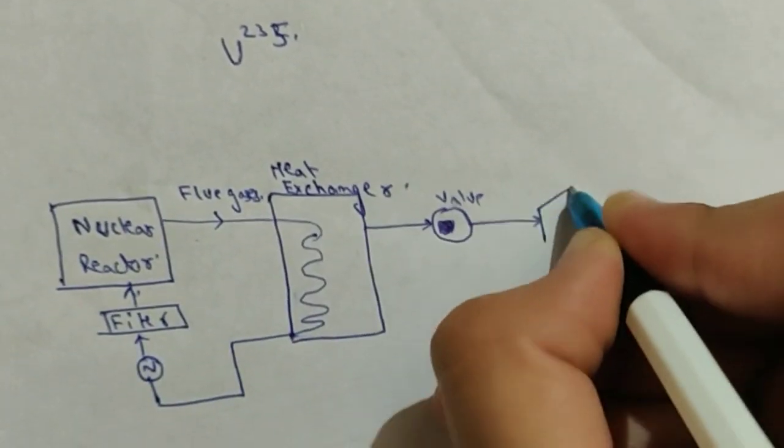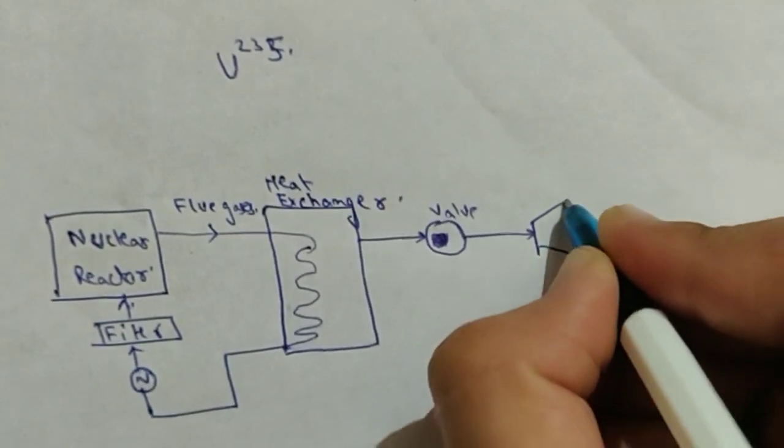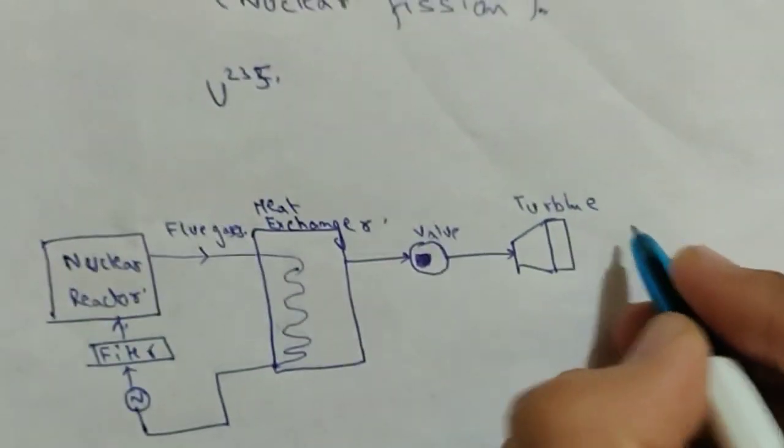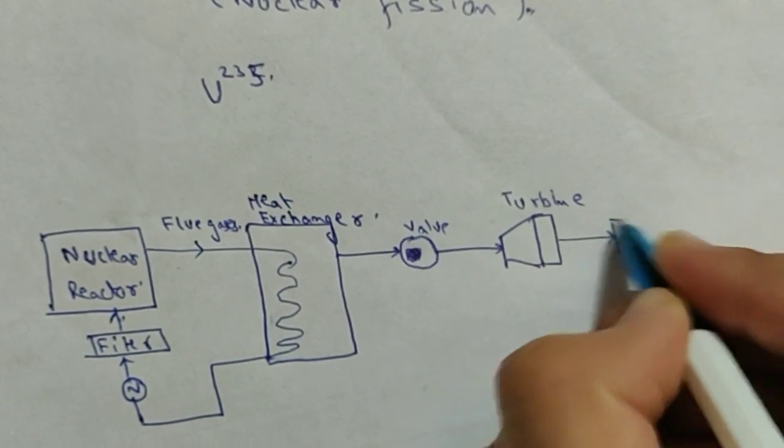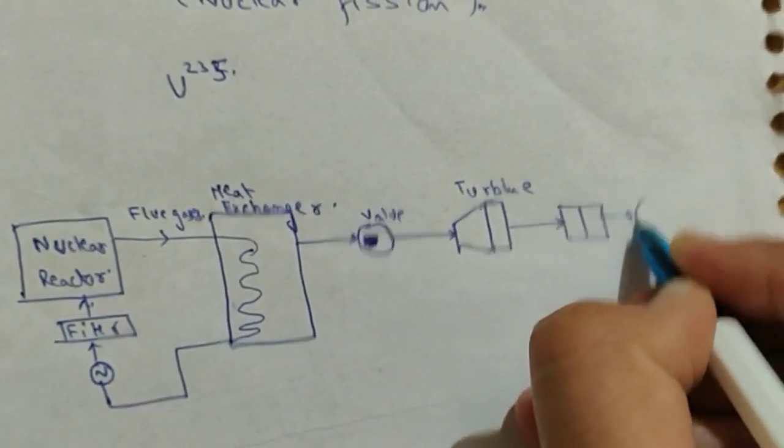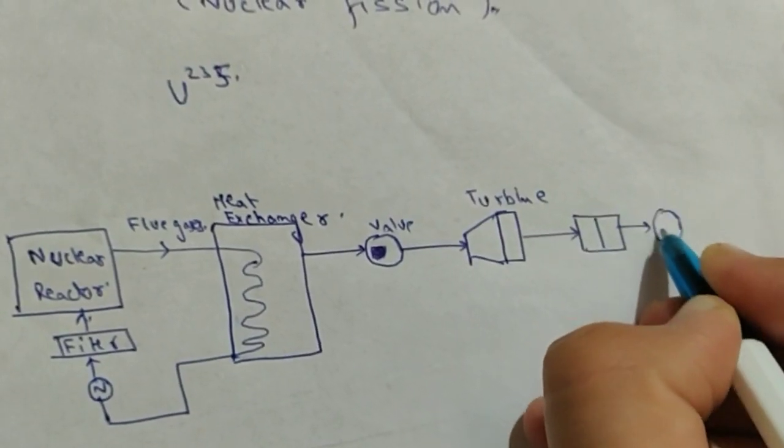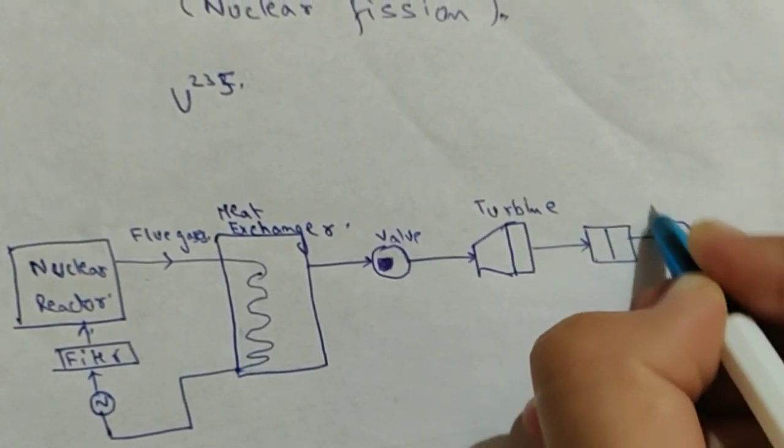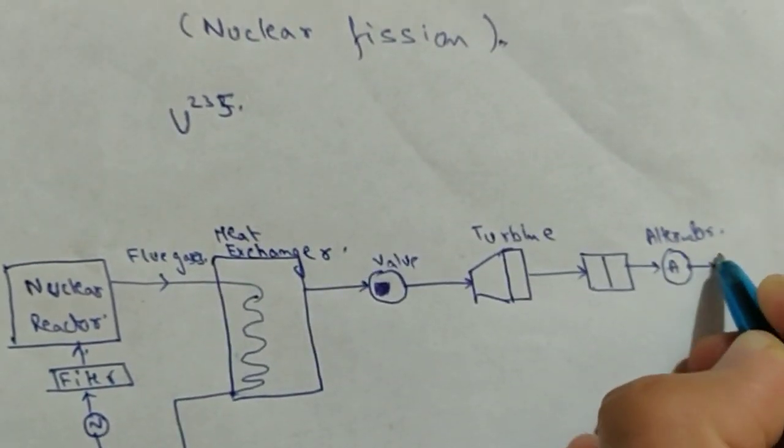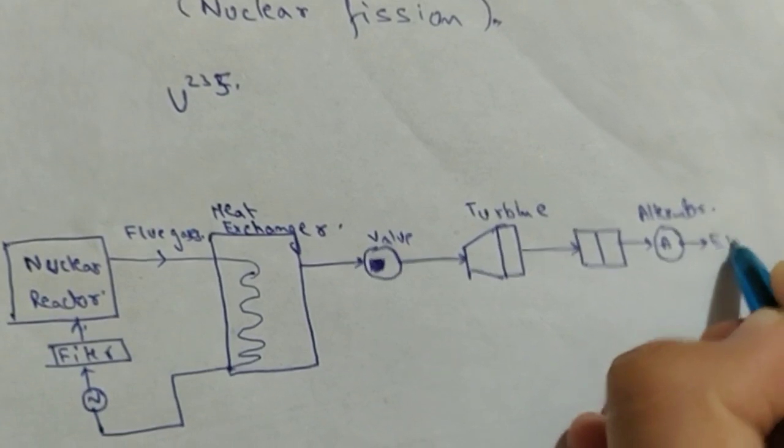This steam drives a turbine. Turbines are always represented by this symbol, remember this. This turbine is coupled with an alternator. This alternator produces electricity.